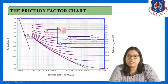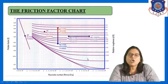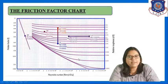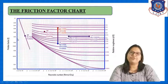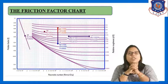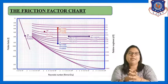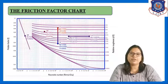There is a straight slanting line for laminar flow, and after that different curves for different k/d values. If you know the NRe value and the k/d value, you can read off the friction factor f from the chart. The friction factor chart is very important when we need to calculate friction factor graphically.